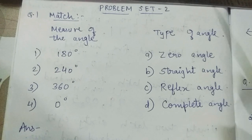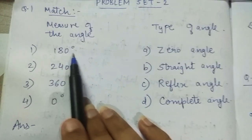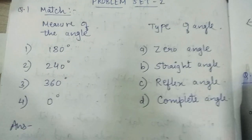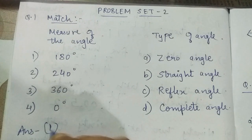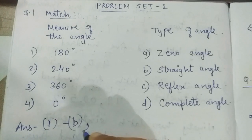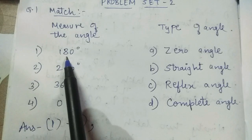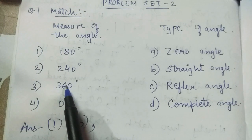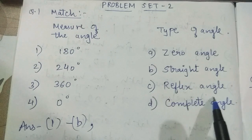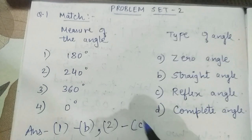First one is 180 degree — so 180 degree is a straight angle, correct. So 1 dash B. Next, 240 degree — 240 degree is greater than 180 degree and less than 360 degree, so this becomes a reflex angle. So 2 dash C.